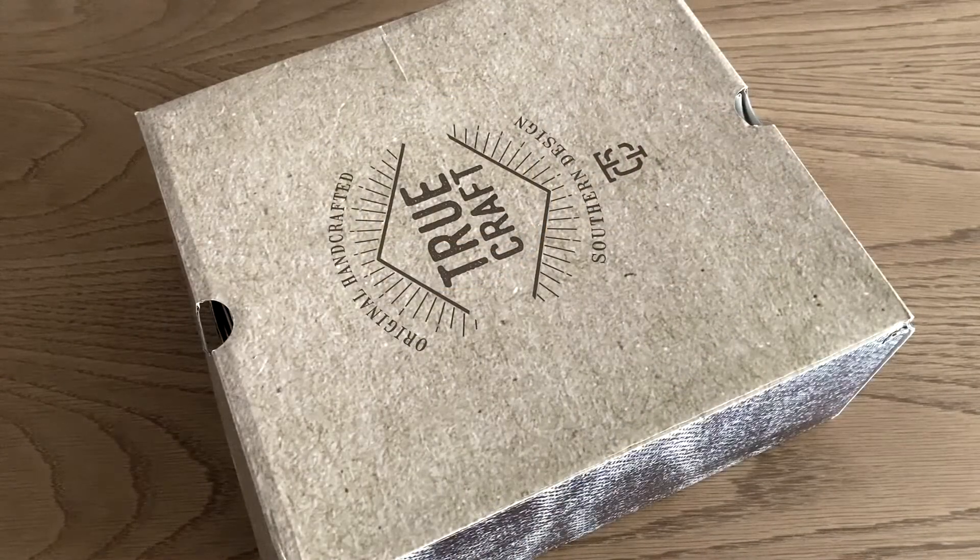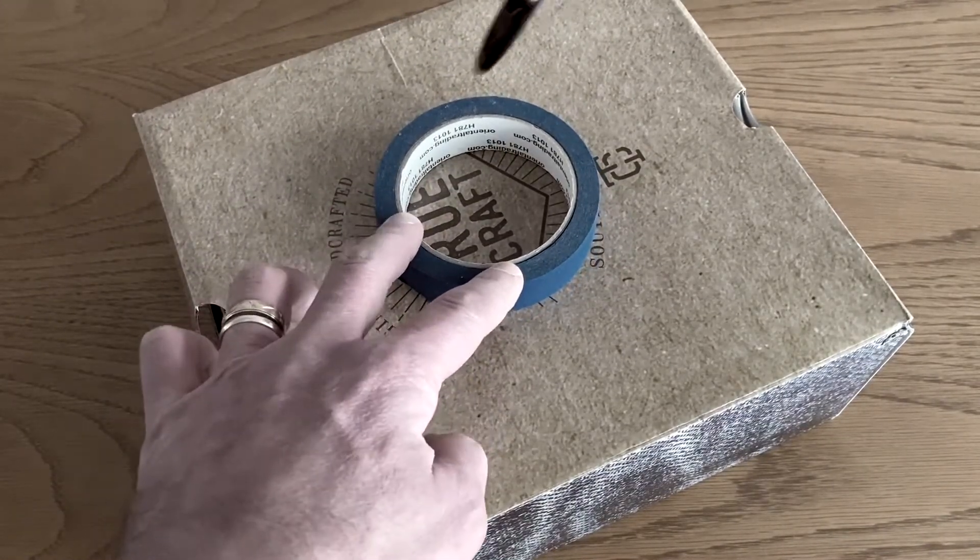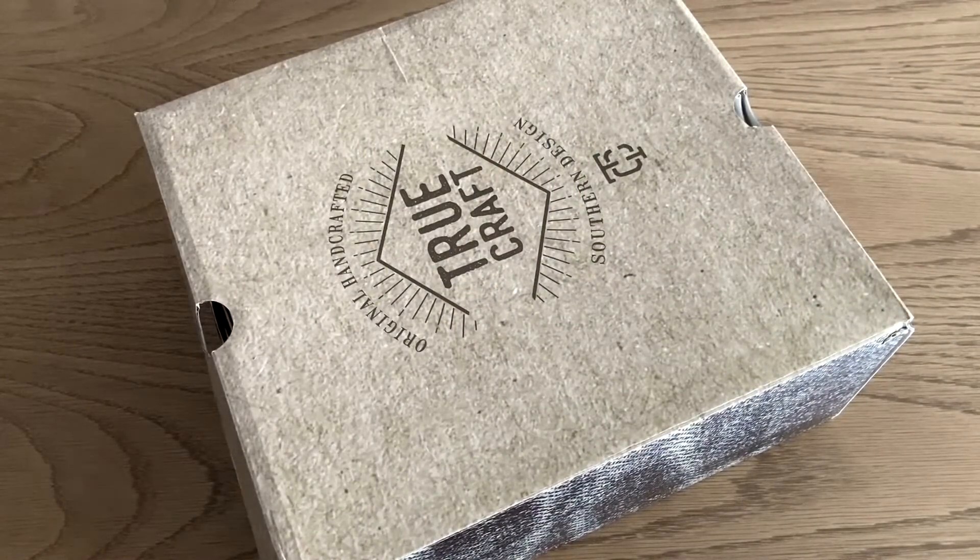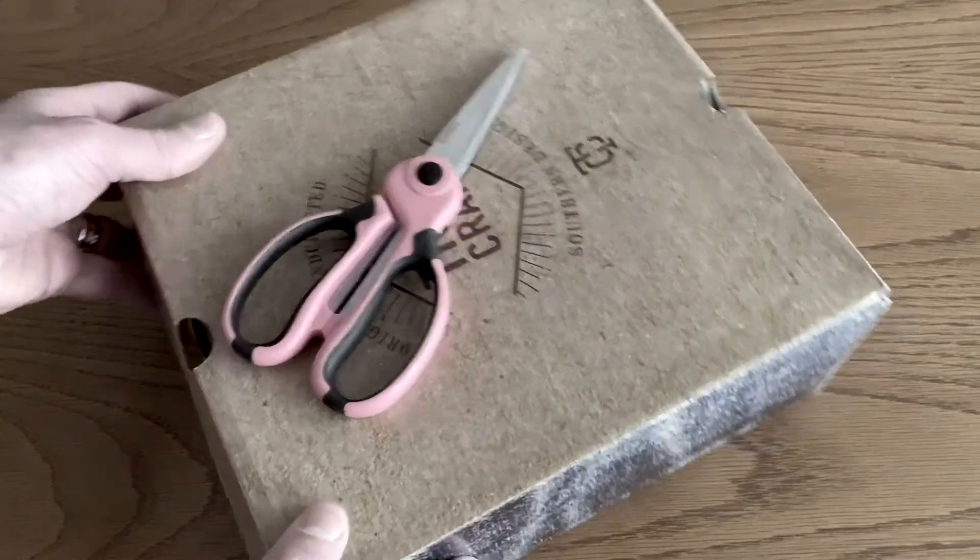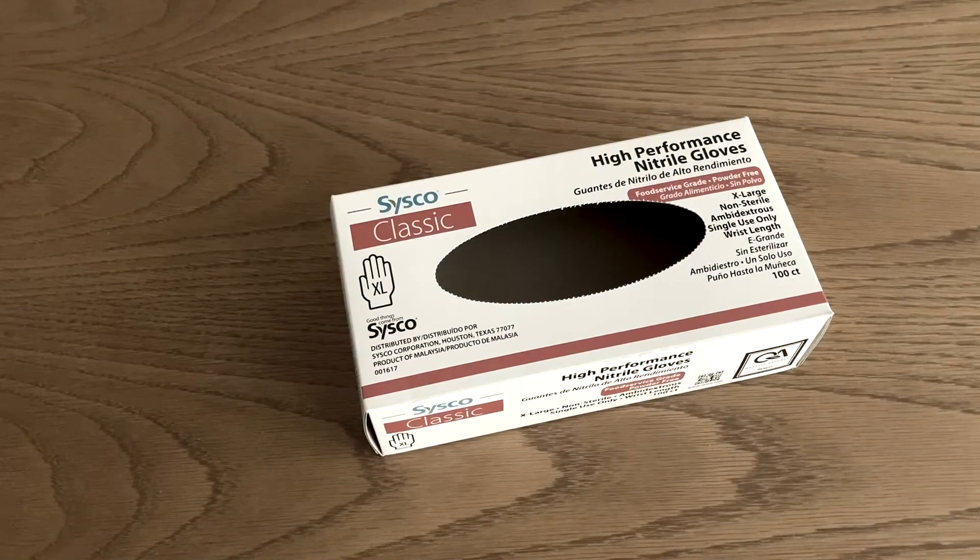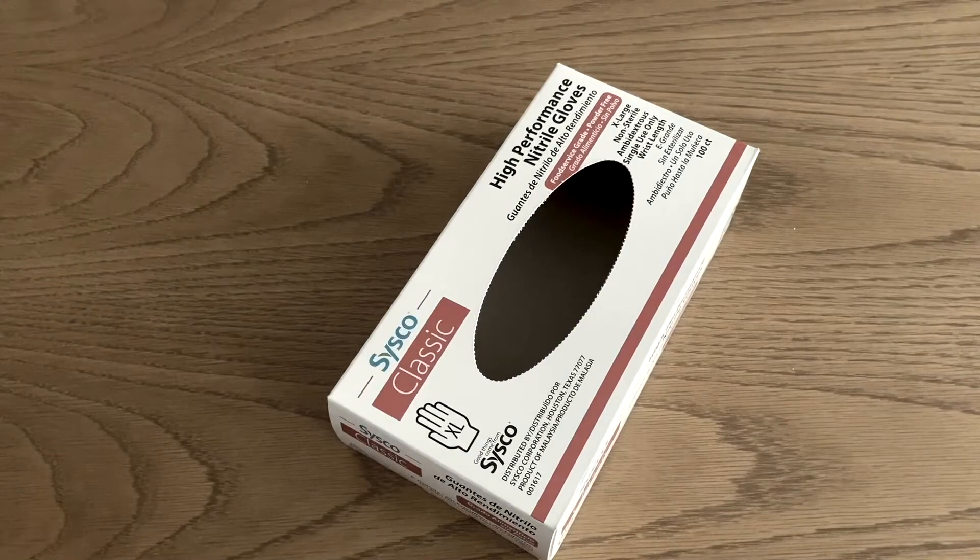If you're using a shoe box, place the round object on top of the box, trace around it, and use the scissors to cut out the hole. I'm making it easy on myself by using a vinyl glove box, which already has the hole pre-cut. A tissue box will also work.